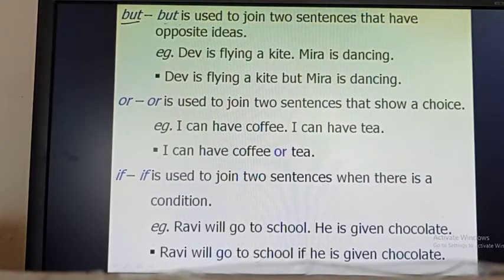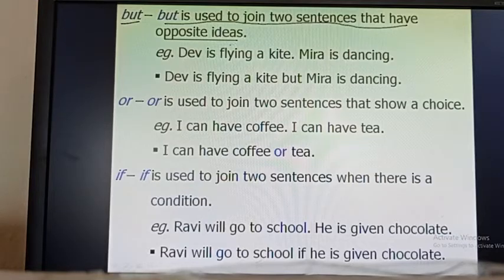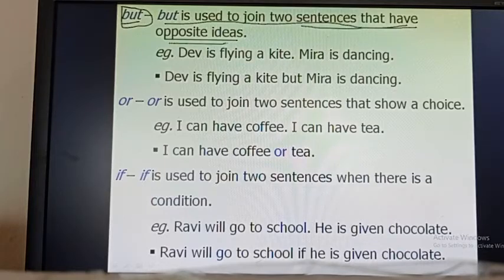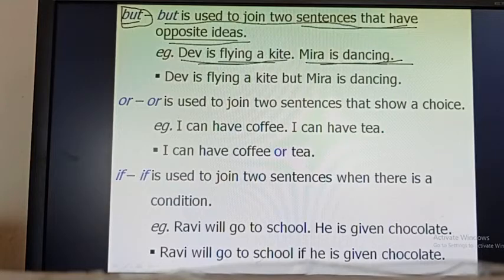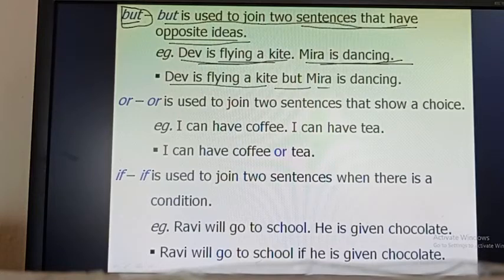But. 'But' is used to join two sentences that have opposite ideas. When we use 'and,' the sentences have similar or equal ideas. With 'but,' we join two sentences with opposite ideas. For example: Dev is flying a kite, but Mira is dancing. Flying a kite and dancing are two different activities — opposite ideas — so we use 'but' to join these two sentences.